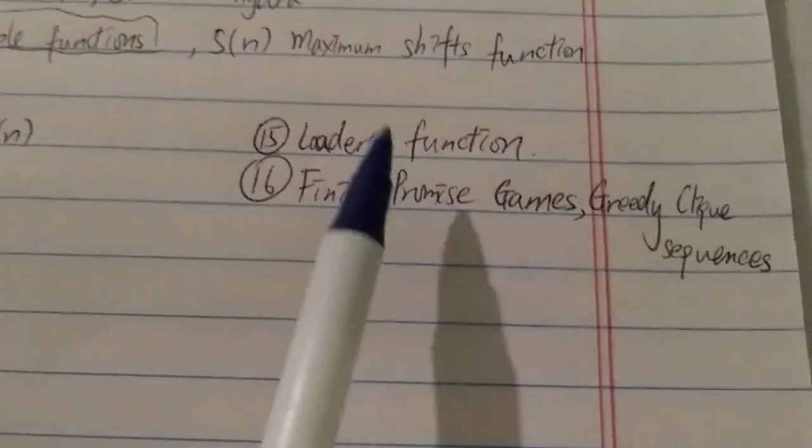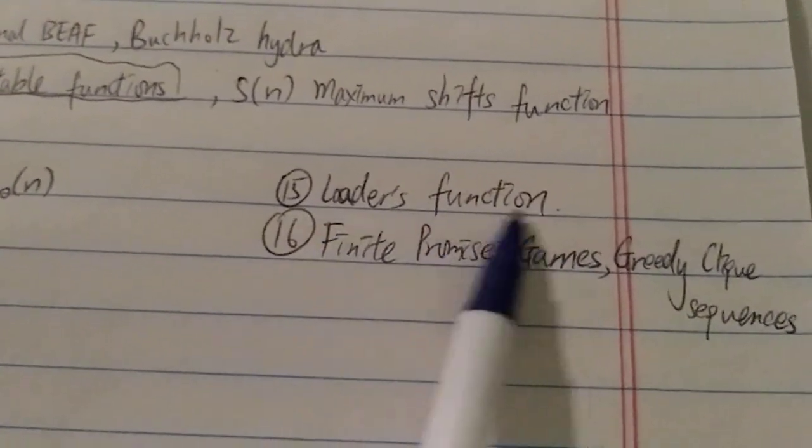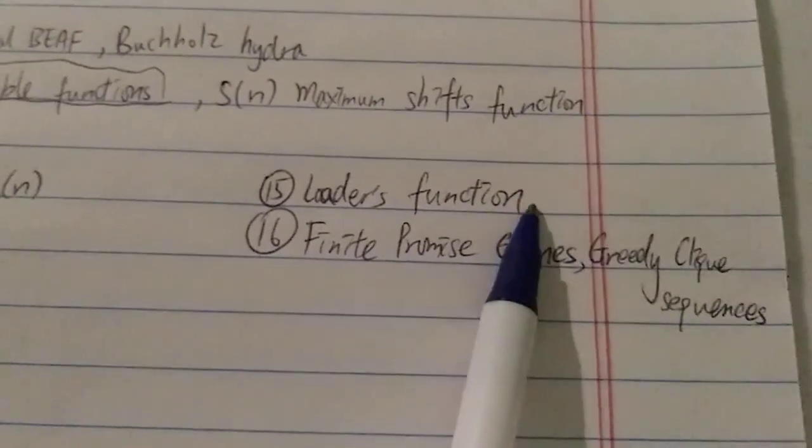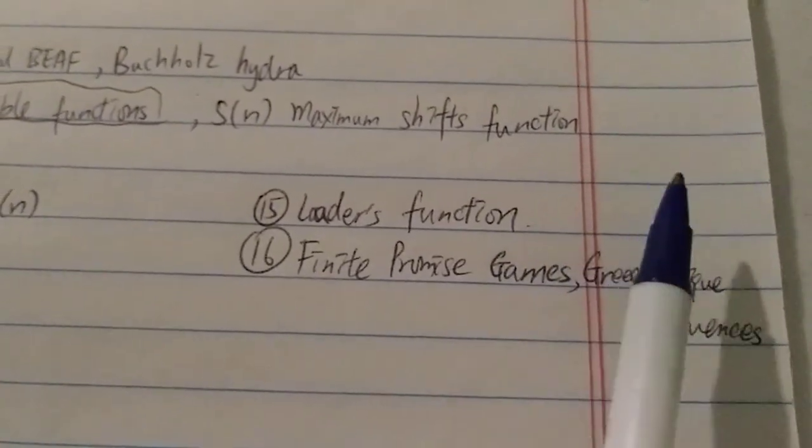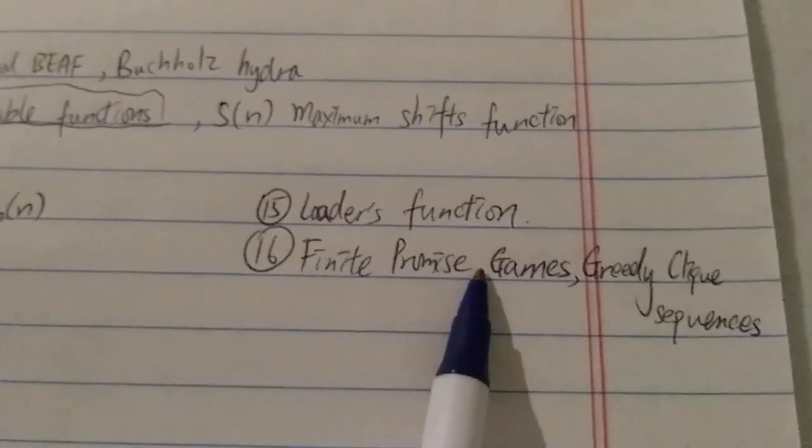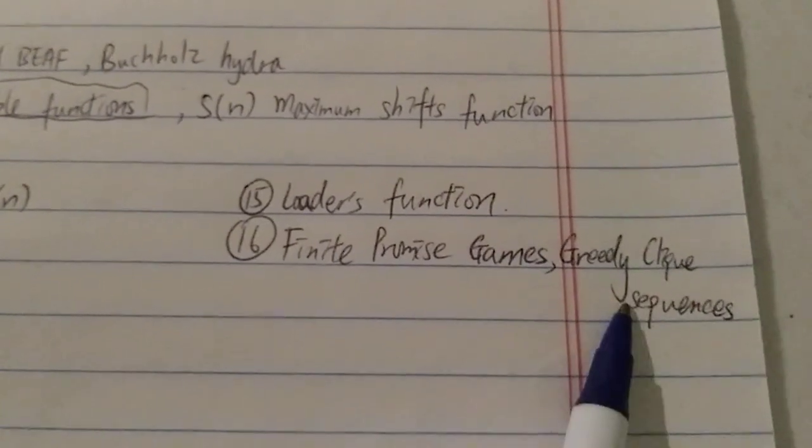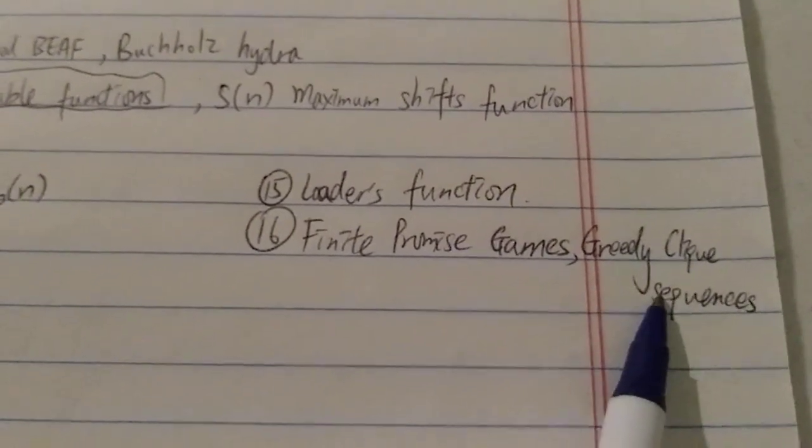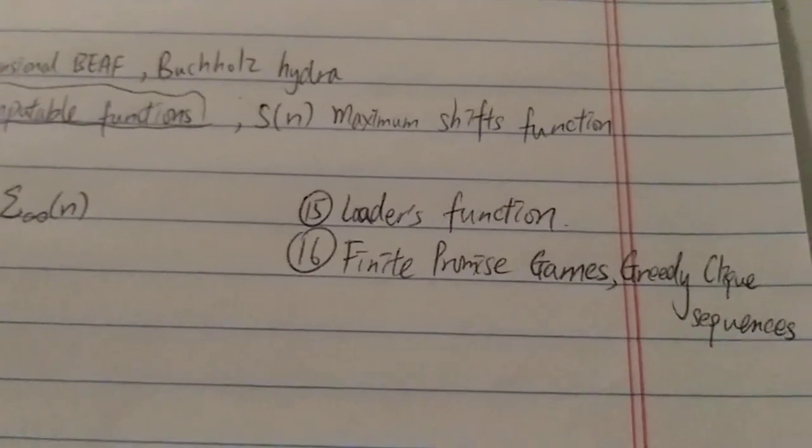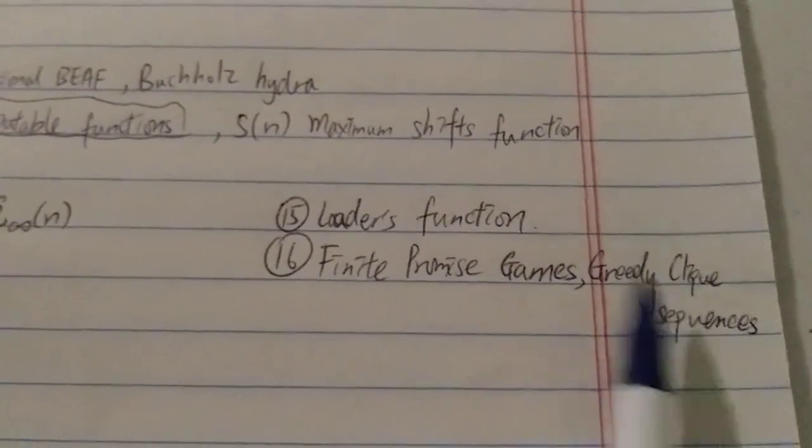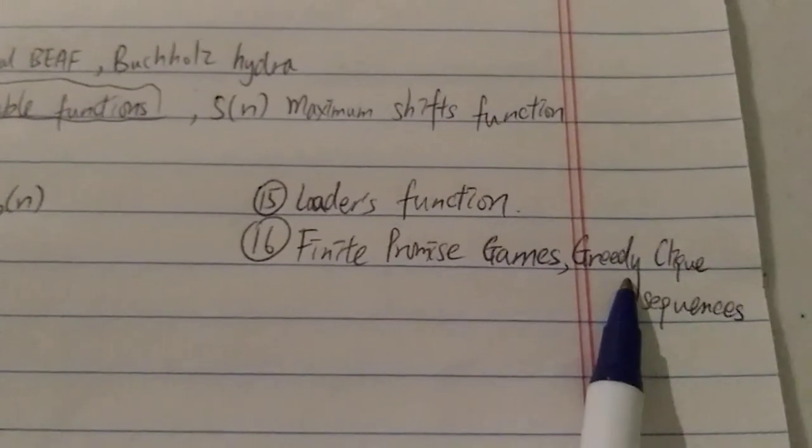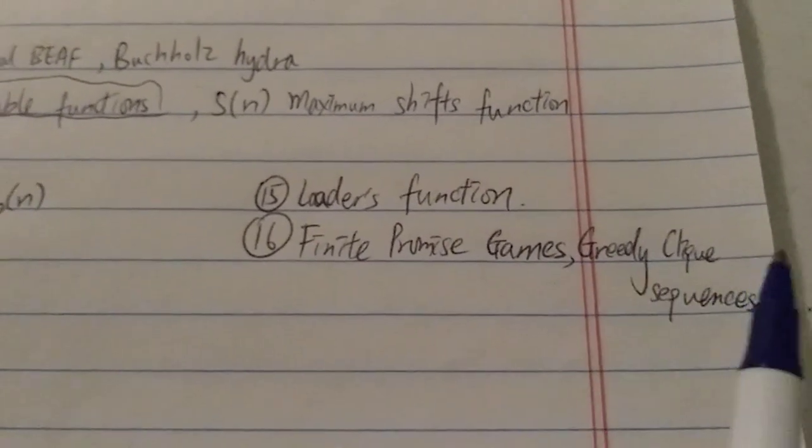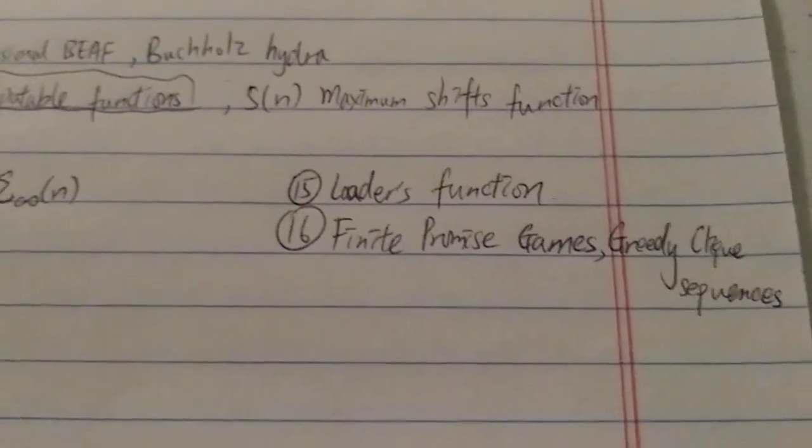But it says from Googleology it grows even faster than the loader's function. And remember loader's function is one of the quickest growing computable function. And as far as I know, these two are also probably still computable, even though not much is known about them. So therefore, which means these two would be probably the biggest computable or fastest growing computable function currently agreed maybe in Googleology.